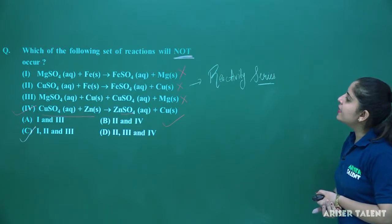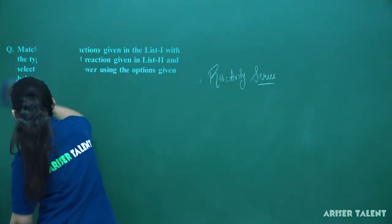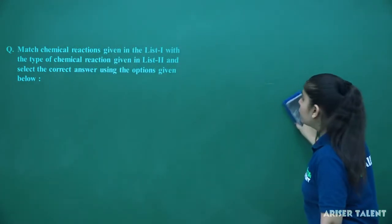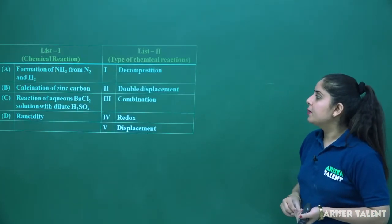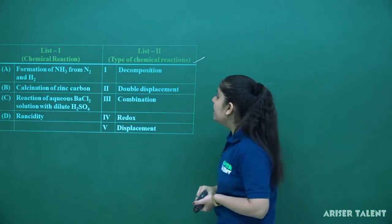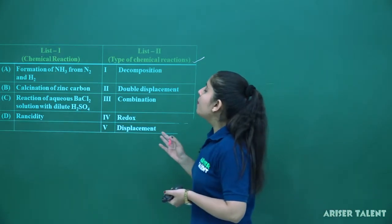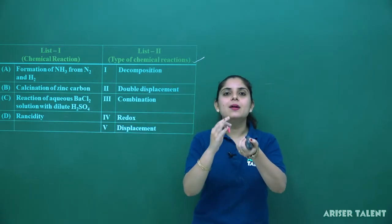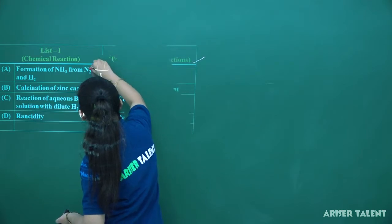Let us move to the next question. Match the chemical equations given in List 1 with the type of chemical equation provided in List 2. In List 1 we have the chemical reactions and in List 2 we have the type of chemical reaction. Formation of NH3 from N2 and H2 — when combining nitrogen and hydrogen to form ammonia, two elements combine to give a particular product. So formation of NH3 is our combination reaction. For the first item, the third option is correct.